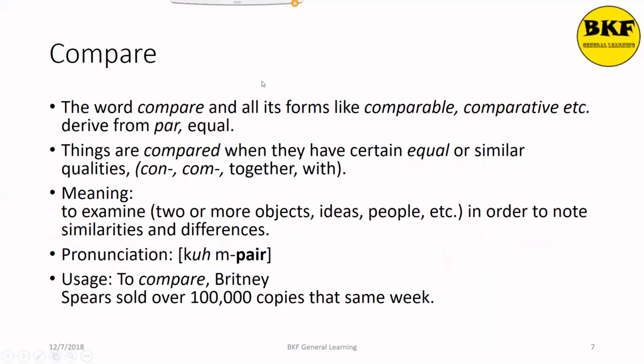Compare. The word compare and all its forms — comparable, comparative, etc. — derive from par, meaning equal. Things are compared when they have certain equal or similar qualities. Com and con means together or with. Its meaning is to examine two or more objects, ideas, people, etc., in order to note similarities and differences. The stress is on the 'par' syllable. Here's a usage: To compare, Britney Spears sold over 100,000 copies that same week.